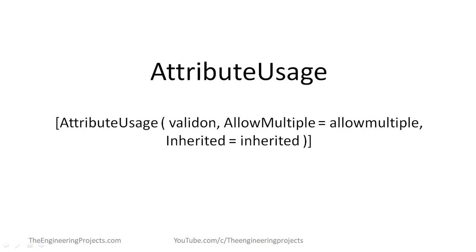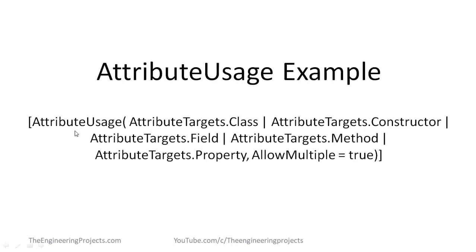AllowMultiple is optional and provides a boolean value for the AllowMultiple property of this attribute. If this is true, the attribute is multi-use; the default is false for single usage. The parameter Inherited is also optional and provides a boolean value for the Inherited property. If it is true, the attribute is inherited by derived classes. The default value is false, which makes it non-inheritable.